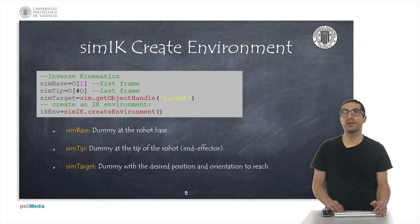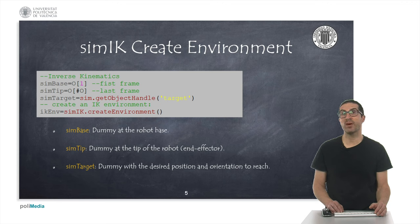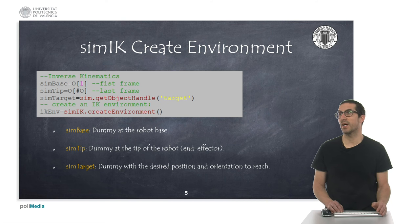In the code shown here, I have created three variables: two of them to define the base and the tip of the robot from the reference frame dummies we have in our scene, and a third variable to define the target dummy. These variables correspond to actual objects in the CoppeliaSIM scene. Next, we create the IK environment using the simIK.createEnvironment function, and store the result in the ikEnv variable that will be used in all plugin function calls, as we will see later.